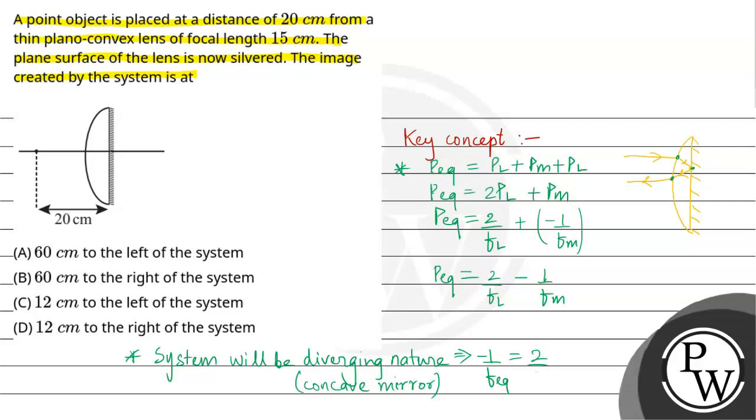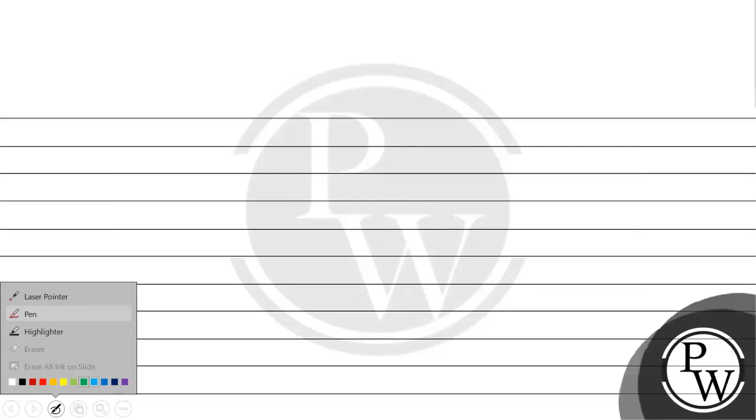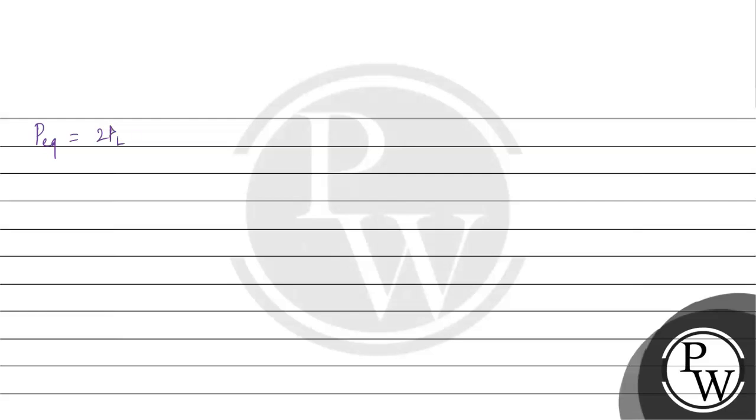And this is equal to 2 by F_L minus 1 by F_M. So with the help of this, we will proceed further. Aur is question mein, P_equivalent ka jo formula aaya tha, that was 2P_L plus P_M.